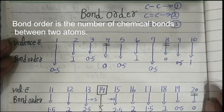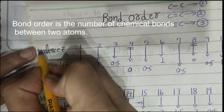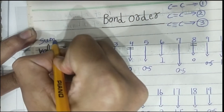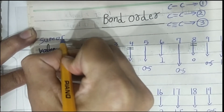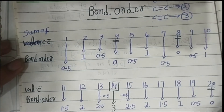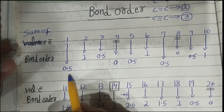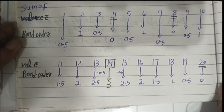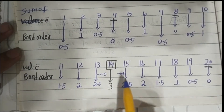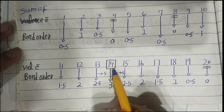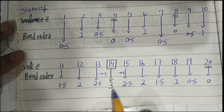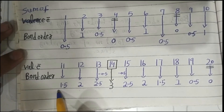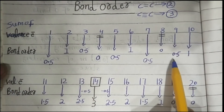Here is our trick to remember bond order. If the sum of electrons is 1, then bond order is 0.5. If the sum of electrons is 14, then bond order is 3. To remember this trick: if sum of electrons is 14 then bond order is 3, and going back the scale is 2.5, 2, 1.5, 1, and 0.5.